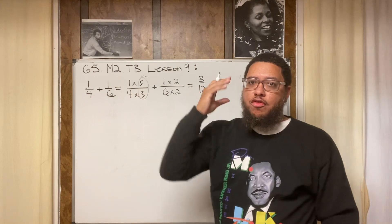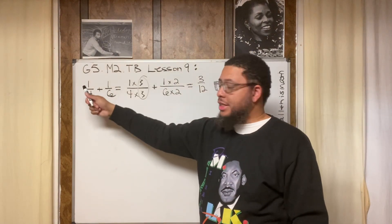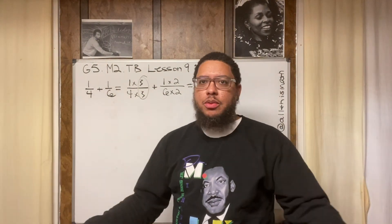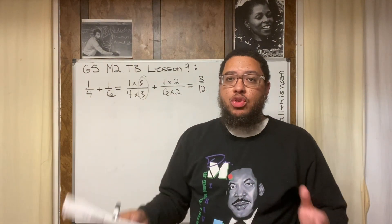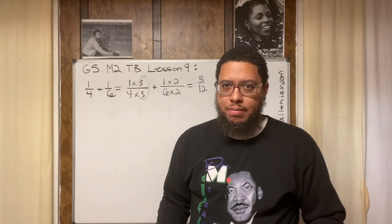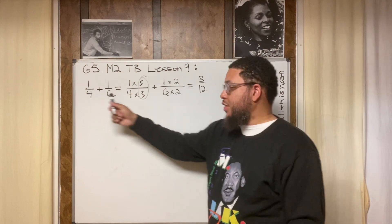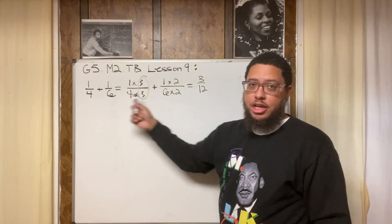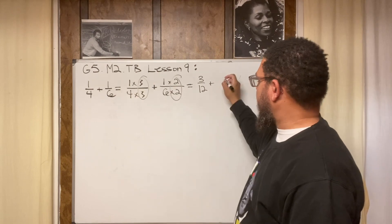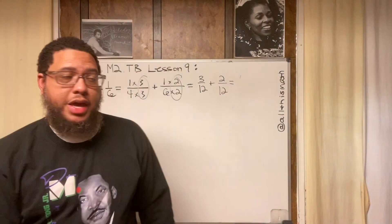This is a fundamental concept in math: the numbers are different but the value is the same. One-fourth is the same thing as three-twelfths. It's like synonyms in ELA — totally different words but they mean the same thing. Same thing in math: one-fourth is a synonym for three-twelfths, they're equivalent. Two over two is the same as one, so now we have two-twelfths. Add them together and we get five-twelfths. That's our answer.